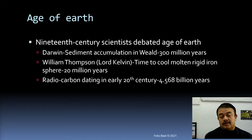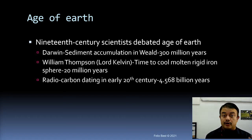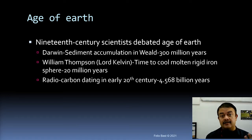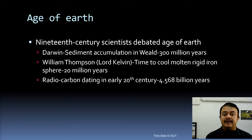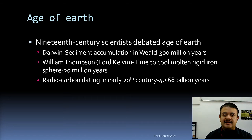Darwin back-calculated how long this weathering had been happening — arriving at around 300 million years, which is immensely old. When Darwin proposed this, people started protesting, especially William Thompson, Lord Kelvin, a very famous and accomplished physicist — the Kelvin temperature scale is named after him. Lord Kelvin protested, saying the Earth is only 20 million years old.